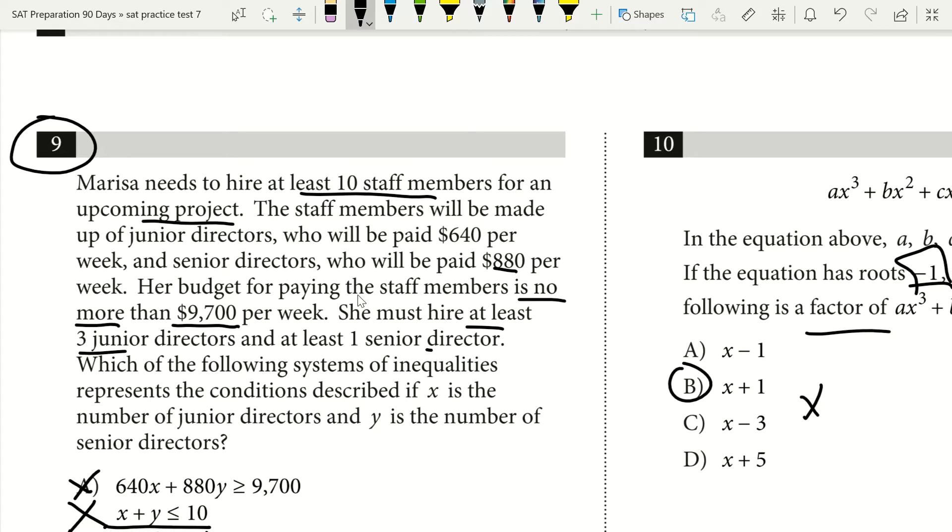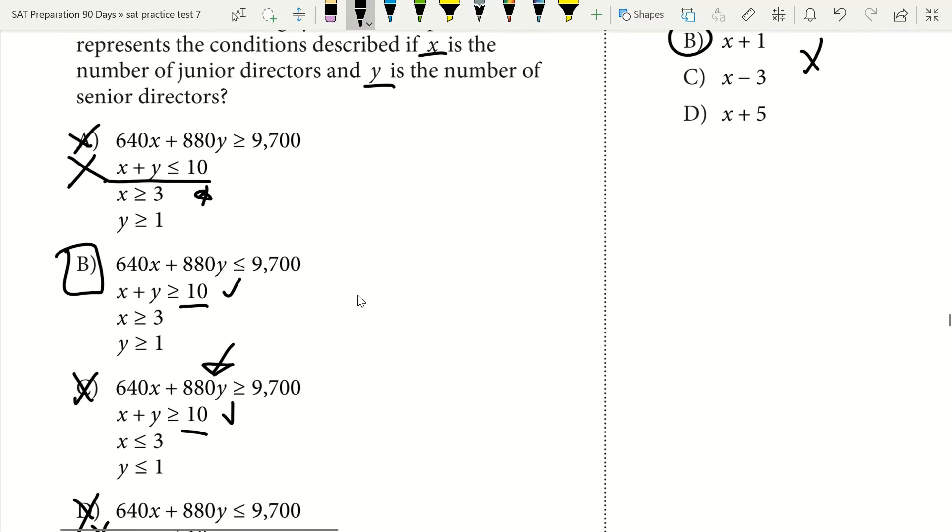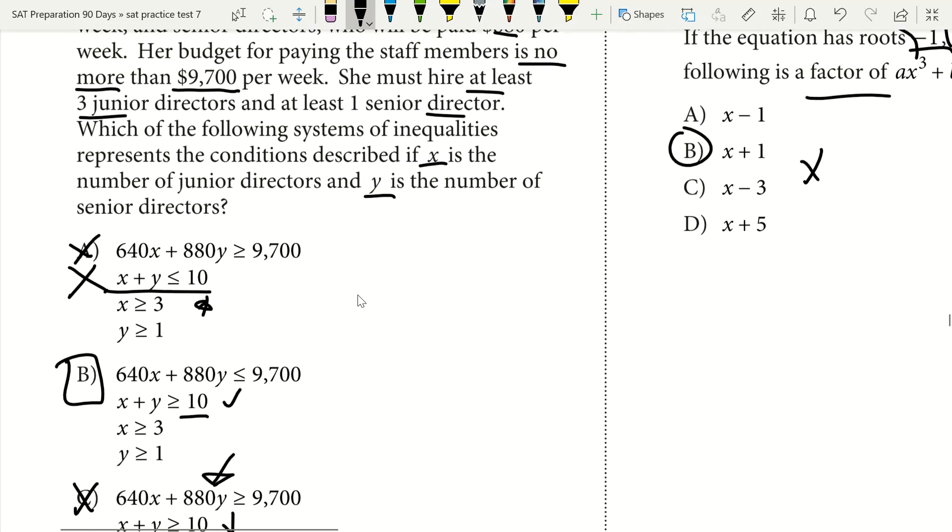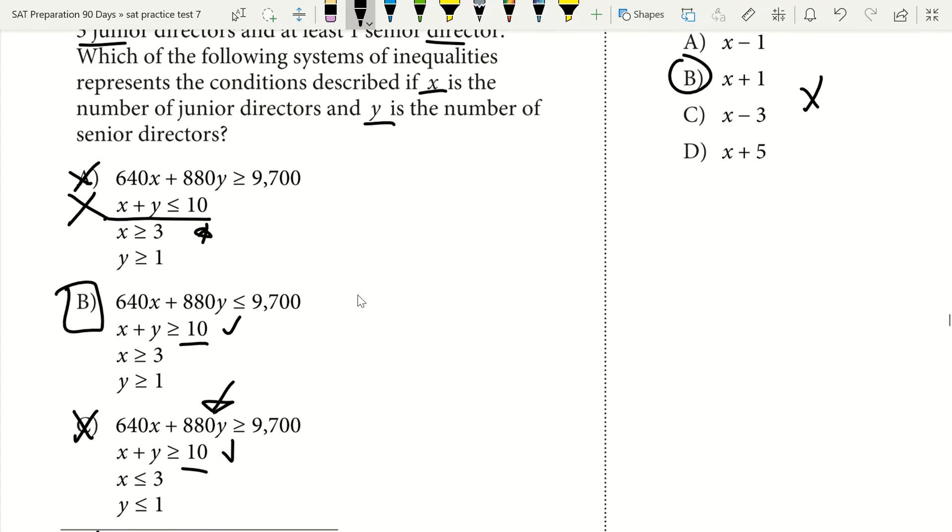She must hire at least three junior directors and at least one senior director. If x is the number of juniors and y is the number of seniors, obviously it's got to add up to at least 10. So A and D are automatically out. We're between B and C, and based on this top equation B has to be correct.